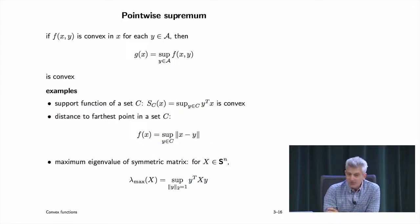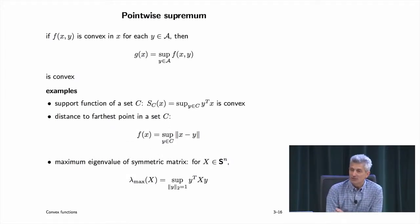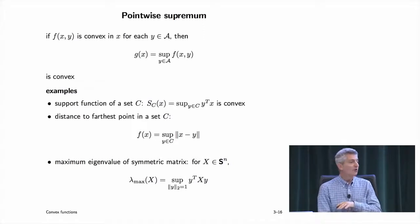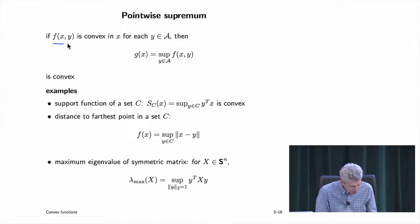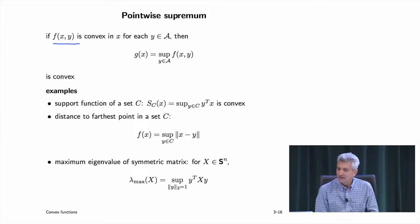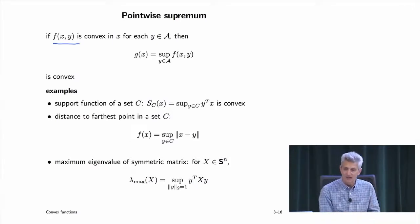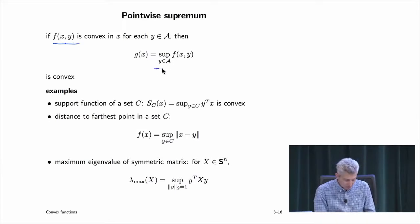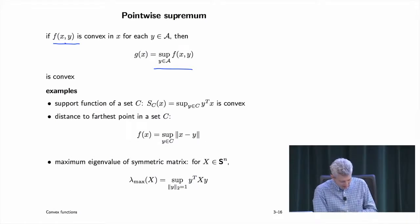This idea extends to infinite sums — it's the same as intersection of arbitrarily many convex sets being convex. The point-wise supremum: you can take the supremum over an arbitrary set of convex functions. If f(x, y) is convex in x for each y (where y can be completely abstract), then g(x) = sup_y f(x, y) is convex in x.